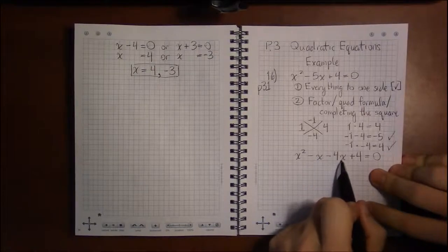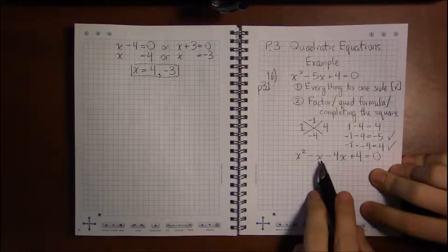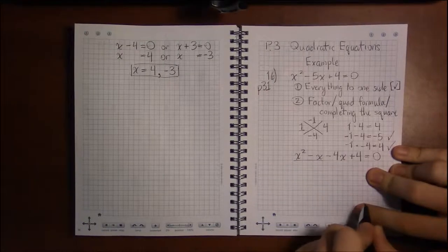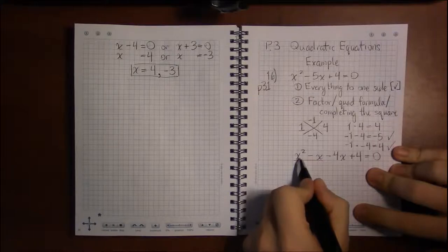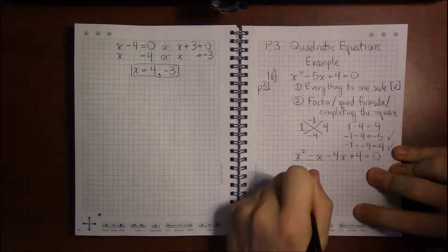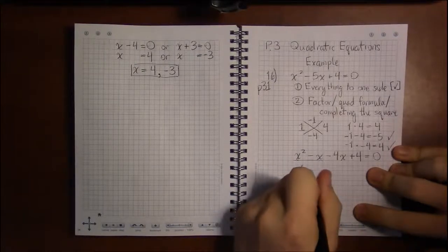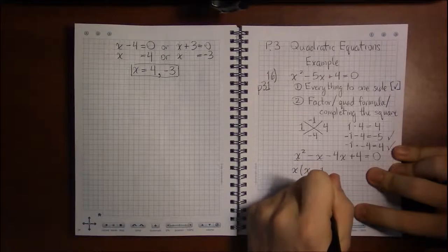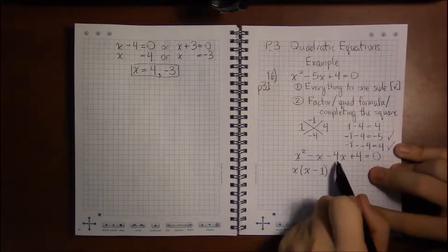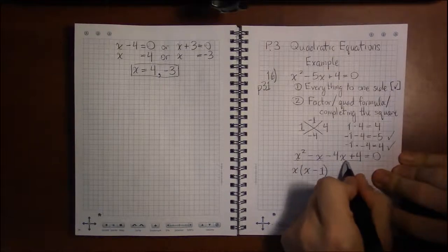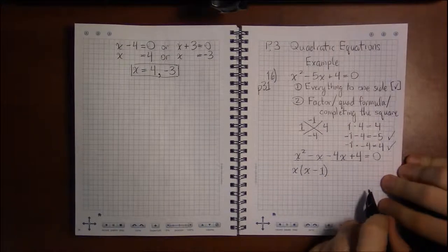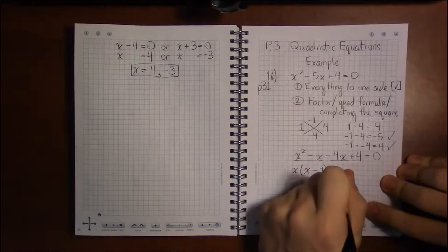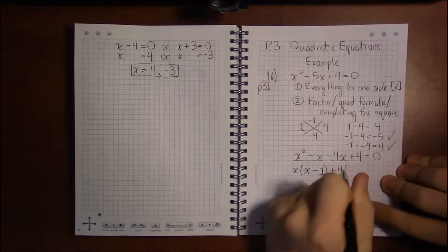Let's double-check: x squared is the same, and minus x minus 4x is minus 5x — correct. Now I ask what's in common with the first two terms. Both x squared and minus x share an x, so pulling out x leaves x times (x minus 1). Now looking at the next two terms, minus 4x and plus 4, I try pulling out a 4 in common.